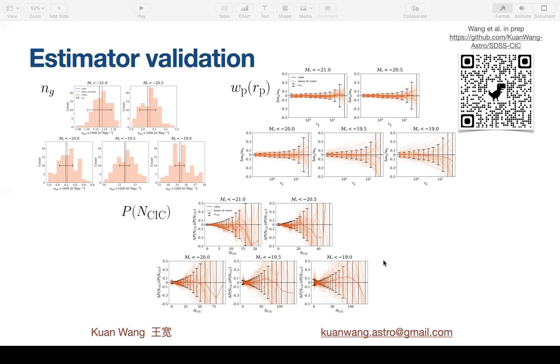And now for WP and counts in cylinders, the cone measurements are shown as fractional deviation from the cube measurements. The thinner red lines in the background are individual cone mocks, and the thick red line is the mean of the cone mocks. So again, the black error bars show the total jackknife covariance from the cube and the cone. So we want the red line to be within the range of the black error bars, and that means consistency between the cube and the cones, which is also true for WP and counts in cylinders for all five samples. So that's good. That means that we can use the cube simulation to fit our measurements of the data.